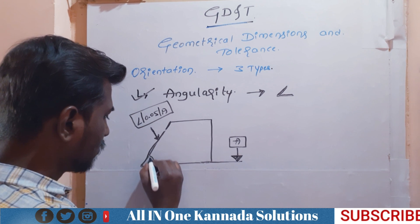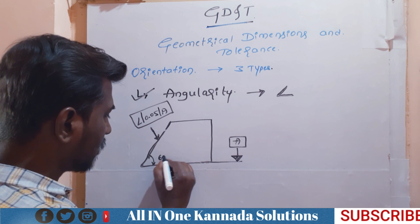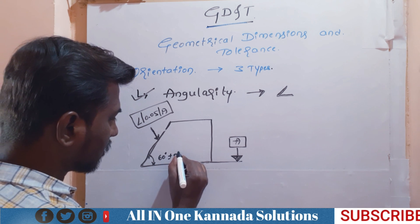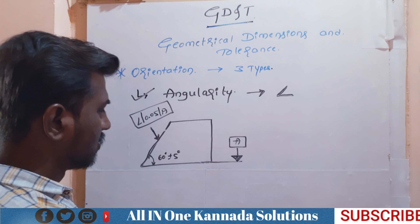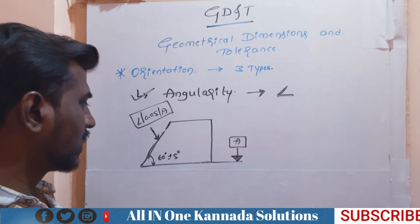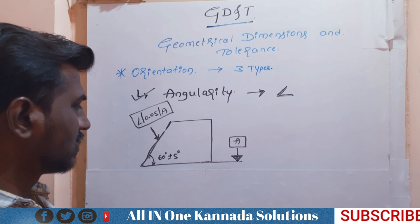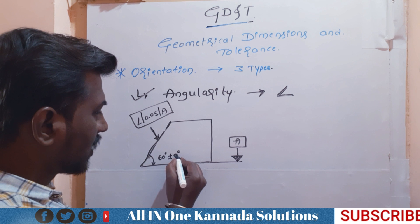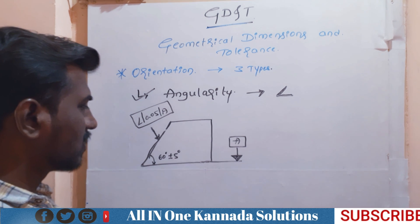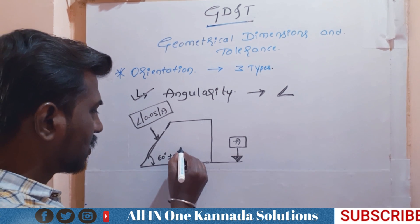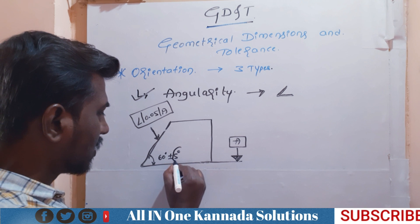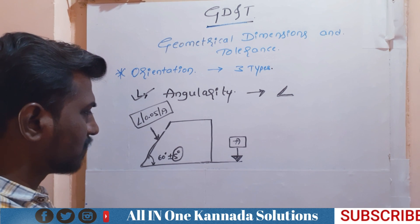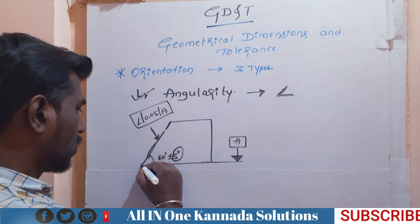The angle is 60 degrees, here it is plus or minus 2 degrees. So most importantly, here is the angle. Angle is applicable to the angle control — but actually, it is not directly applicable to the angle.